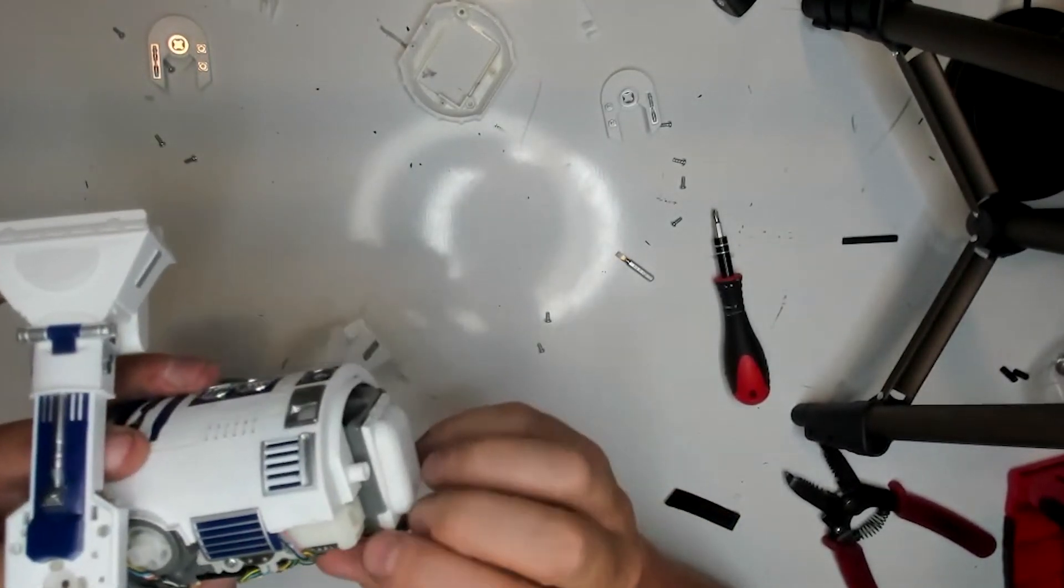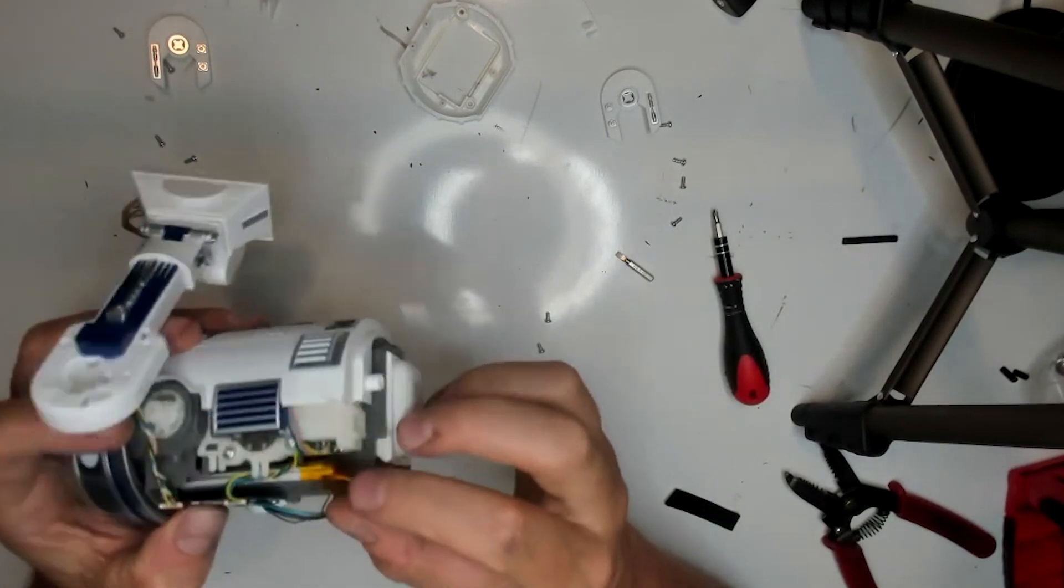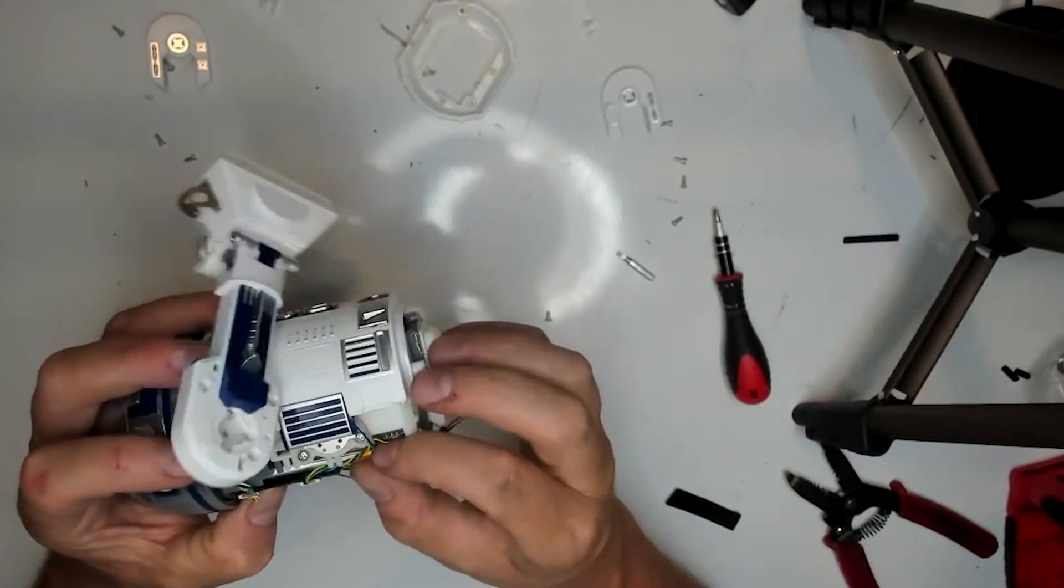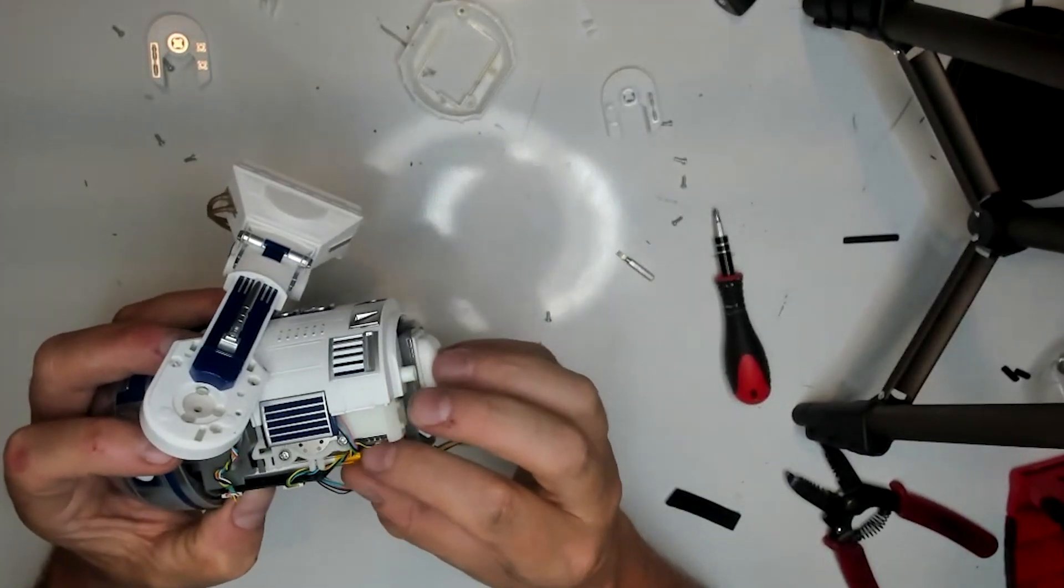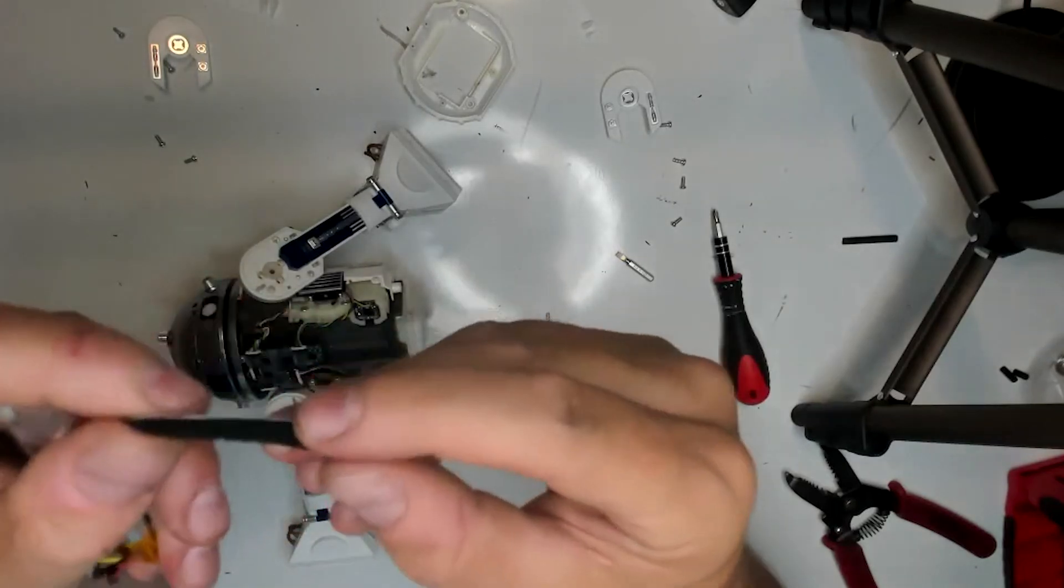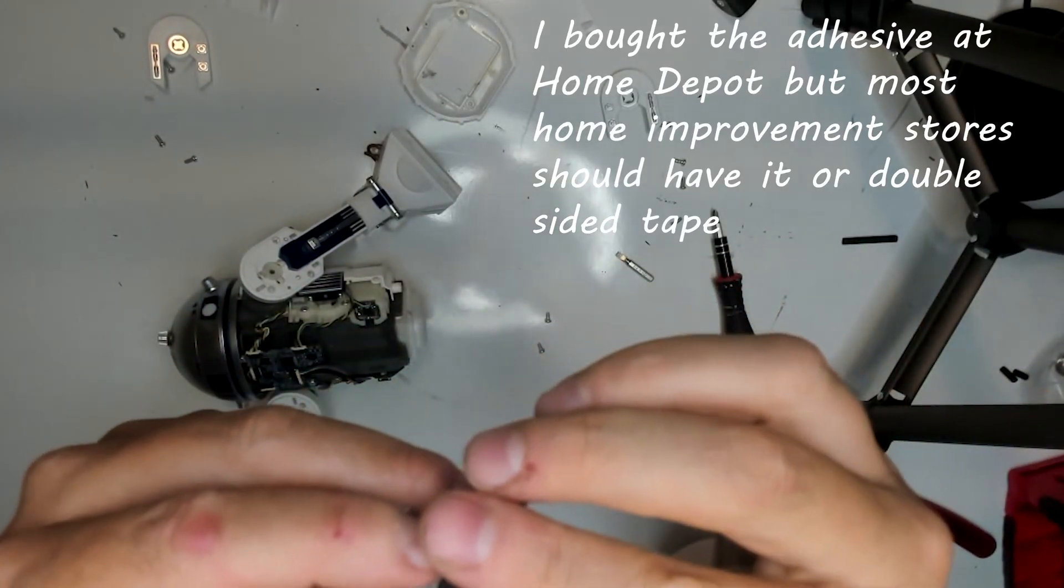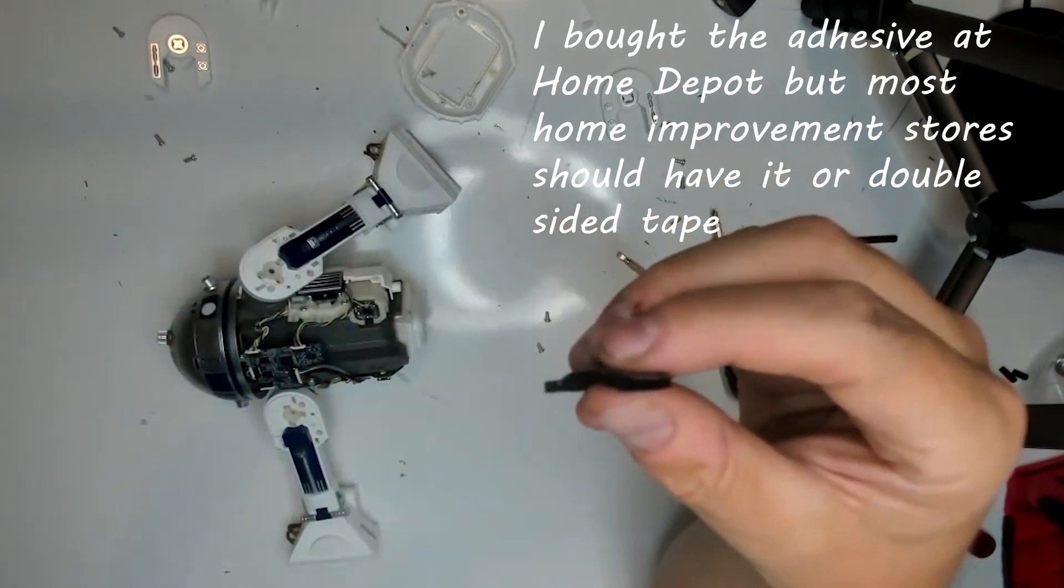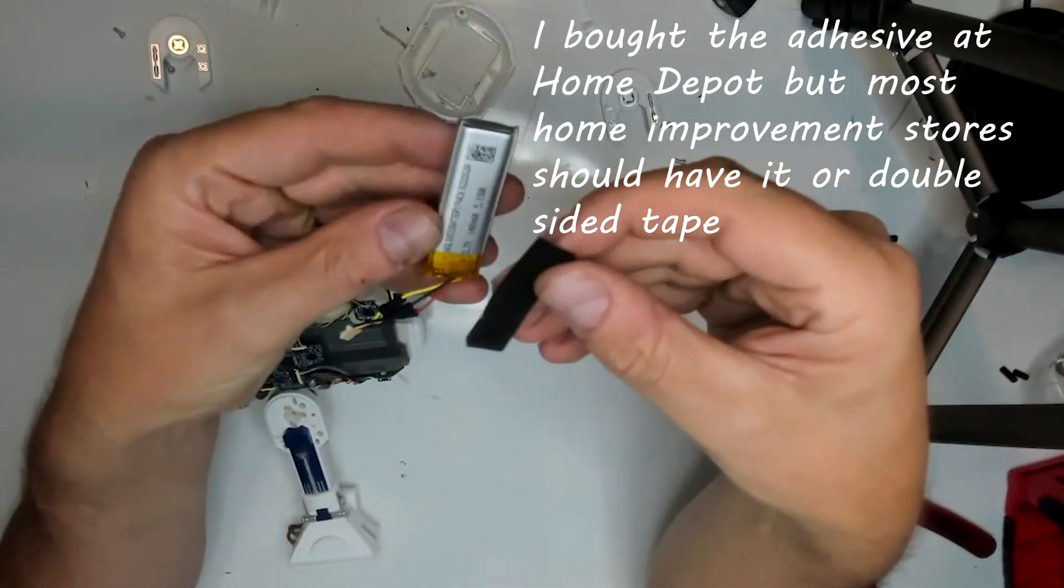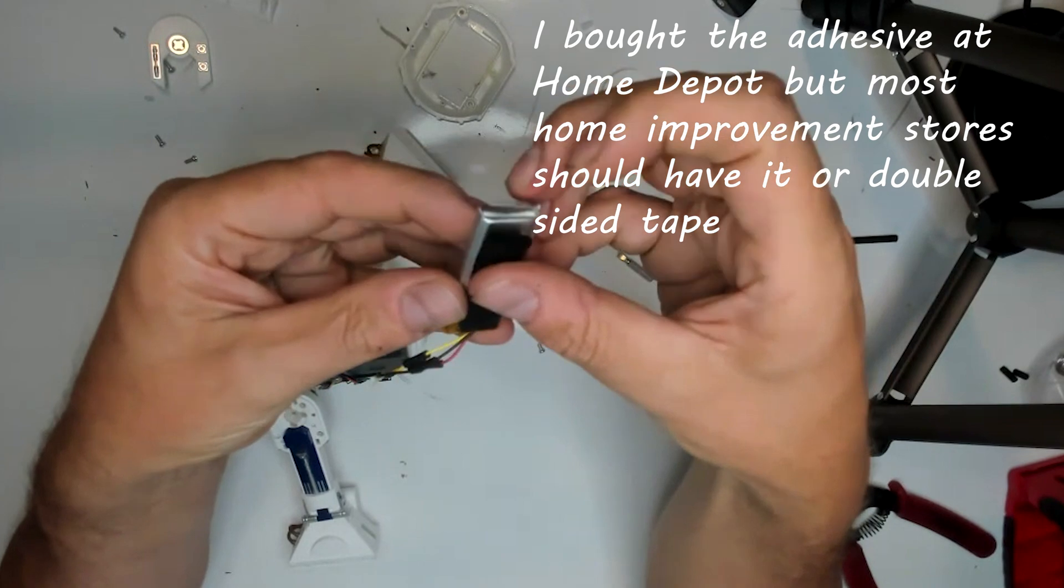As you can see, this battery is much smaller than the original, and I want to find a way to get this mounted securely. I have this felt adhesive I'm going to use because the battery is so much smaller, I need to wedge it in there. And it's just going to be something I have lying around the house. Anything should do, but I'm just going to attach it to this.